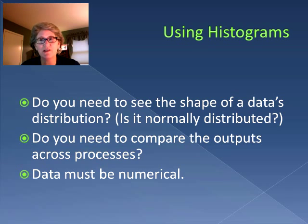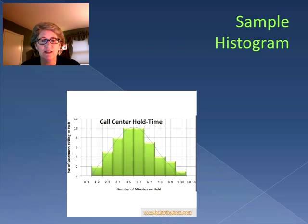So here's a sample histogram for a call center. As you can see, across the bottom we've got categories of the numbers of minutes on hold: zero to one, one to two, two to three, and so forth. And then on the y-axis we are showing the number of customers willing to wait for those particular minutes.